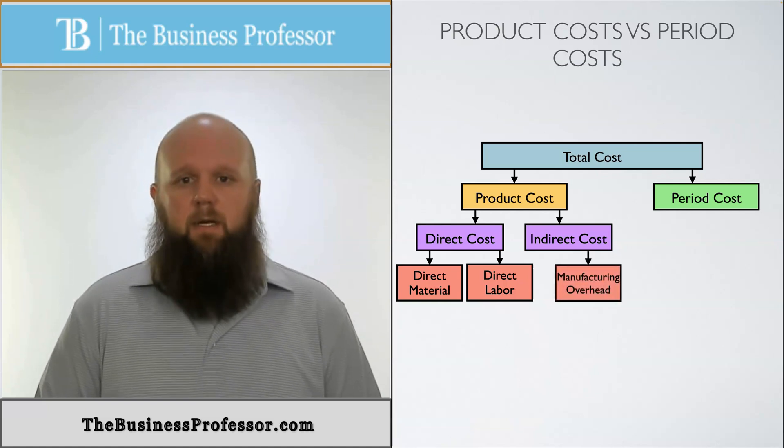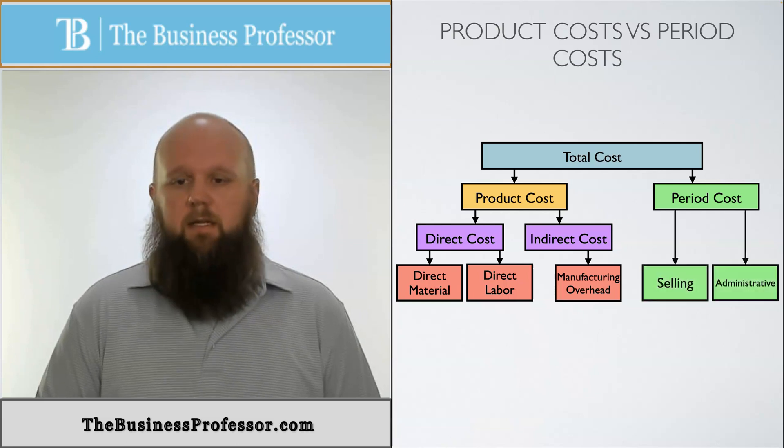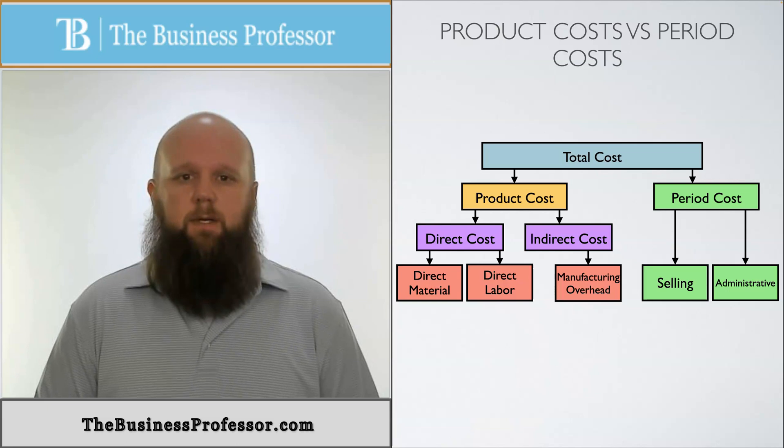On the other side, period costs, we can break those down into selling and admin expenses. So that's the difference between product costs and period costs.